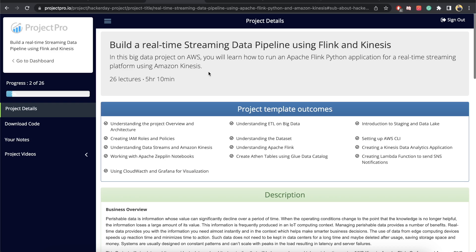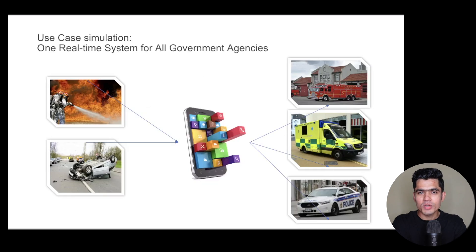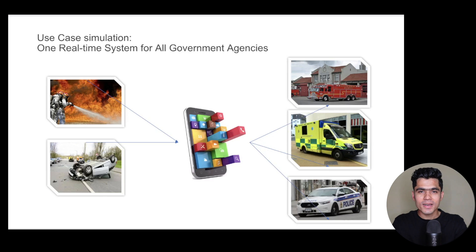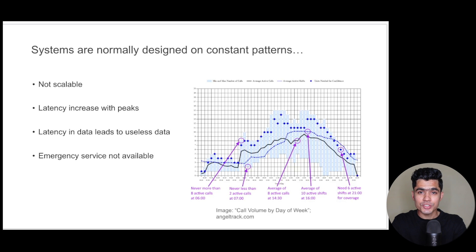Number one on the list is building a real-time streaming data pipeline using Flink and Kinesis. Every data project starts with a problem, so let's first understand the need for real-time data streaming. Consider one use case: a real-time system for all government agencies. If a car accident happens or there is a fire, you need to make decisions quickly — within seconds. If data comes with a delay of 5 or 10 minutes, you won't be able to take immediate actions. That is the reason we need real-time streaming data.